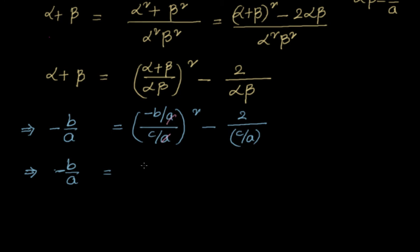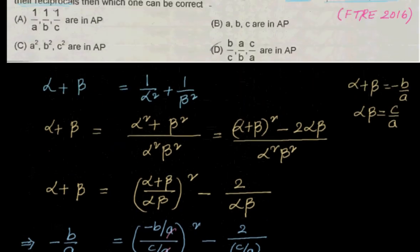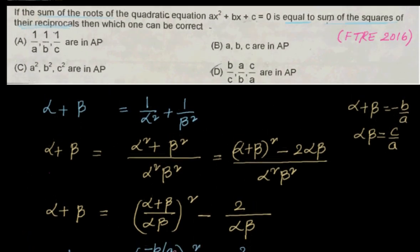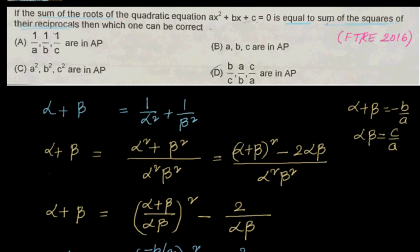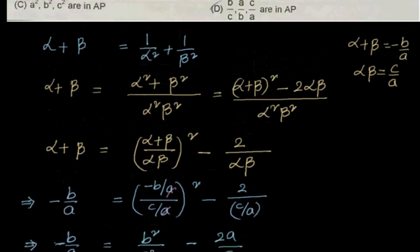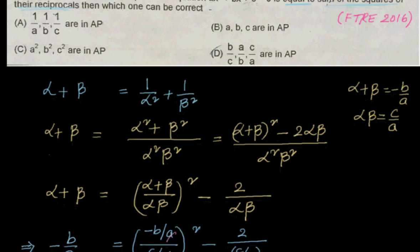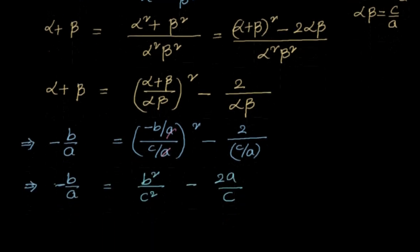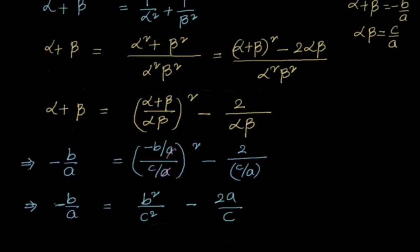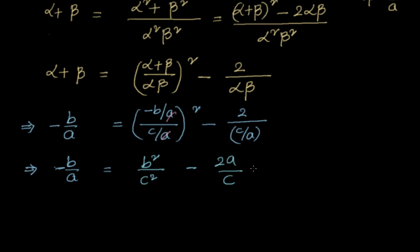We now have −b/a = b²/c² − 2a/c. Looking at the options, we can see terms like b/c, a/b, c/a appearing, which points toward option D. To confirm, we take the LCM and multiply through.